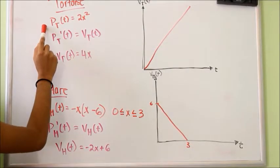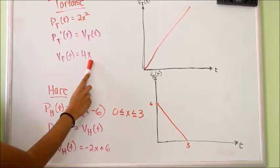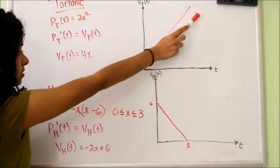So the tortoise position function, when we derive it, we get the velocity function, which equals 4x. So over the course of the race, the tortoise's velocity increases.